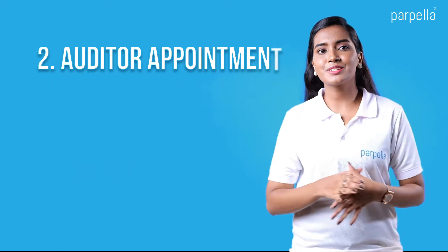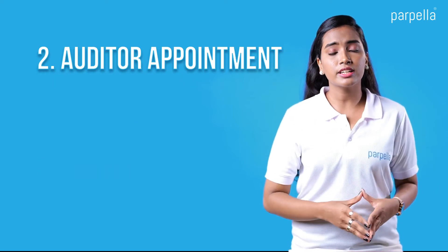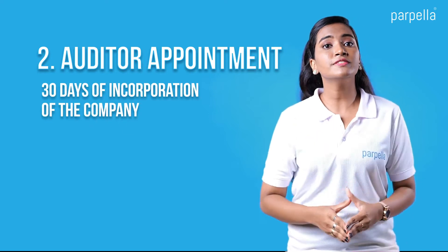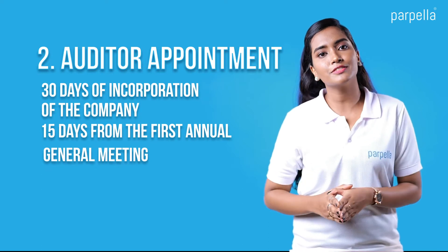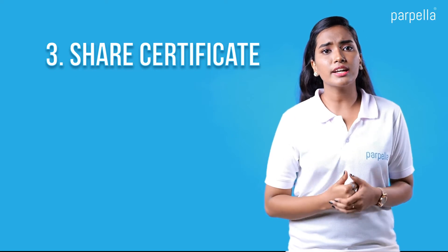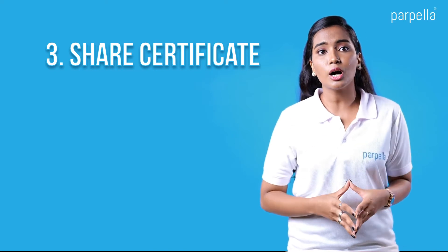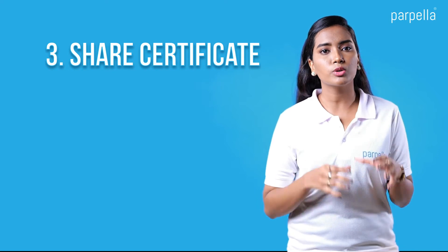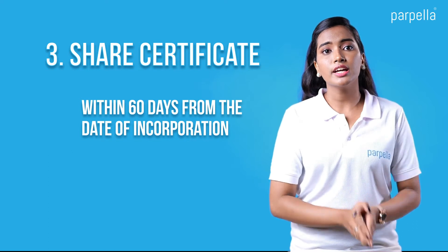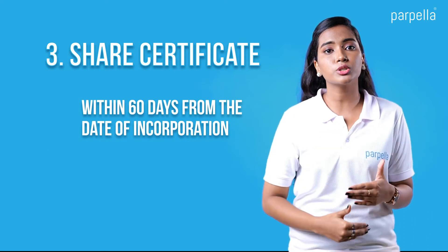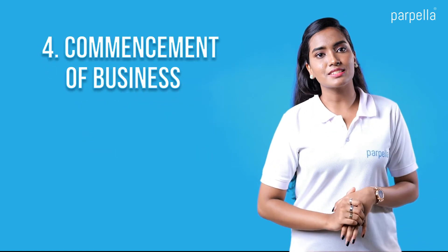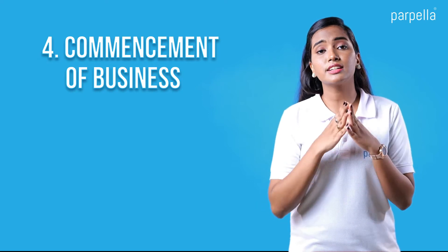Next is auditor appointment. The company may appoint the auditor within 30 days of incorporation of the company, or 15 days from the annual general meeting, by filing form ADT-1. Next is share certificate. The paid-up share capital as declared in the incorporation forms shall be deposited in the bank account opened in the name of the company within 60 days from the date of incorporation, and the share certificate shall be issued to the shareholders within this stipulated time.